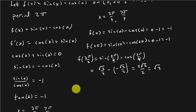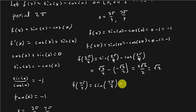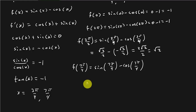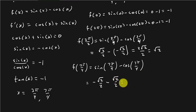Then f of 7 pi over 4 equals sine of 7 pi over 4 minus cosine of 7 pi over 4. The sine of pi over 4 is square root of 2 over 2, but in the fourth quadrant sine is negative, so that's negative square root of 2 over 2. Minus the cosine of 7 pi over 4, which is positive square root of 2 over 2. That gives negative 2 times square root of 2 over 2, which equals negative square root of 2.